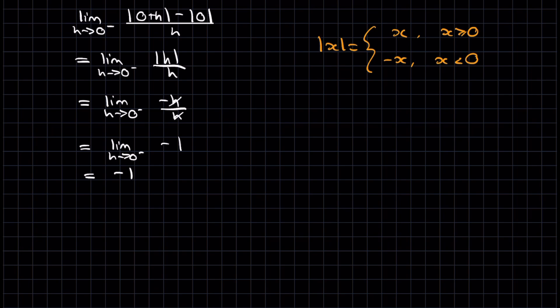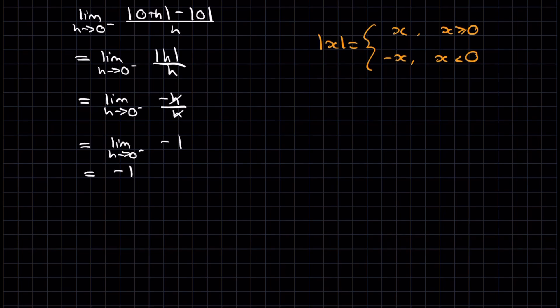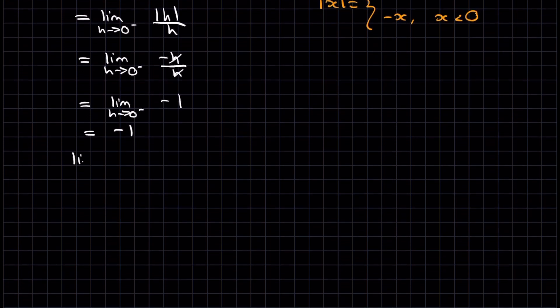Let's now calculate our right-hand limit, and hopefully they're not the same, because we're trying to show that the limit doesn't exist. So we now look at the limit as h approaches 0 from above of this expression. This is the difference quotient. It's going to simplify in the same way down to the absolute value of h on h.